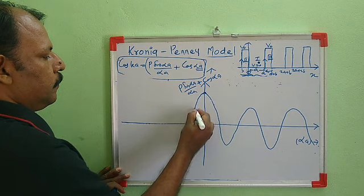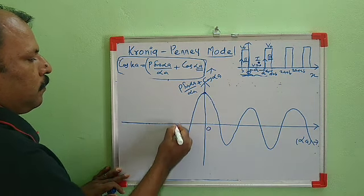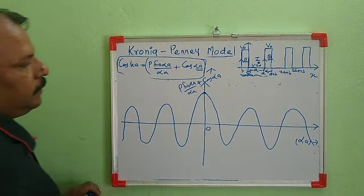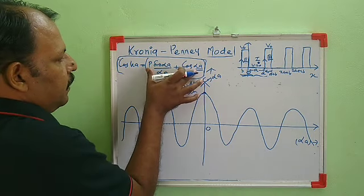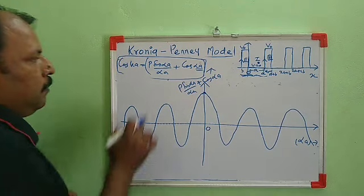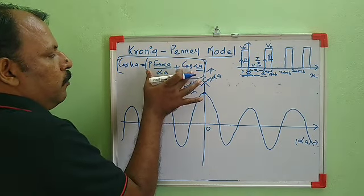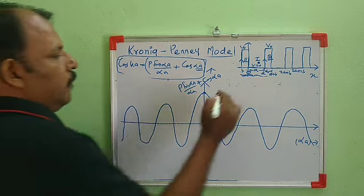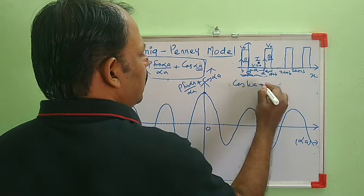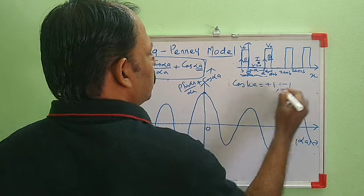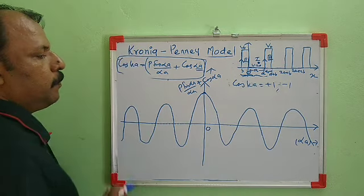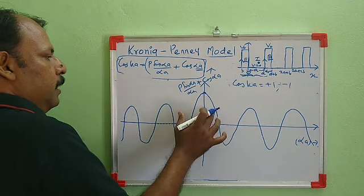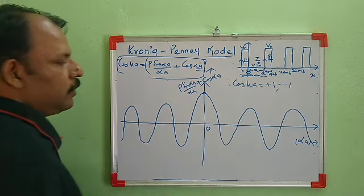For negative values of αa, the variation is similar. This is the variation of the right-hand side of the equation with αa. However, not all values of this function are acceptable, because it equals cos(ka), which has a maximum value of +1 and a minimum value of −1. So only values between +1 and −1 are acceptable.